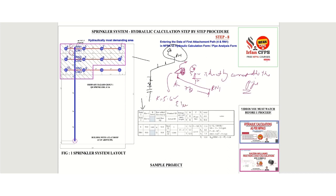We already know the K factor of the sprinkler is 5.6. The branch line elevation is 16 feet from finished floor level. The flow Q from one sprinkler equals area times density: area is 126 square feet, density for ordinary hazard group 1 is 0.15 gpm/sq ft, so the flow from this sprinkler will be 18.9 gpm.